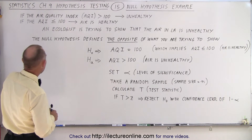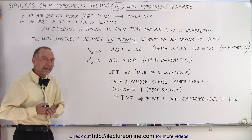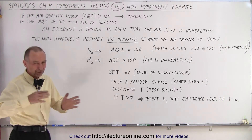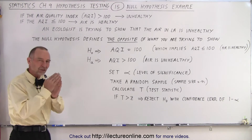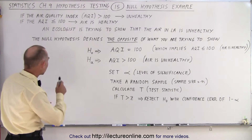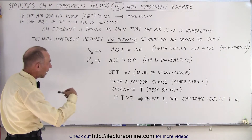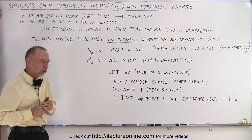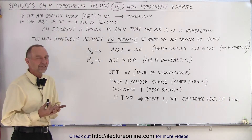If however the AQI is less than or equal to 100, that is considered okay — the air is healthy and we can exercise. Of course there's a range of healthiness, but let's just cut it off at that level. So let's say an ecologist is trying to show that the air in LA is unhealthy. How do we do that using hypothesis testing?